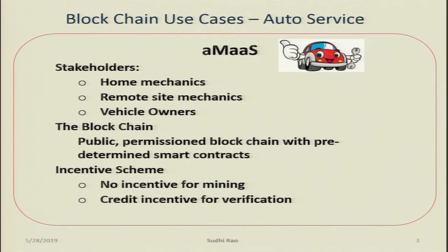The key challenge is how to bring independent auto shops in any location into the network for a possible one-off service. My car broke down, it needed a starter — I took it to a mechanic in Sangli. That person works on my car once and the cost of the transaction itself is quite low. So who are the stakeholders? The mechanics in my home area — these are the key stakeholders with whom I can set up a subscription. There are also remote site mechanics and vehicle owners. There are three types of nodes.